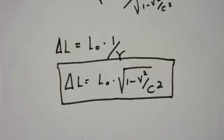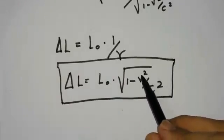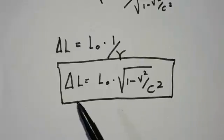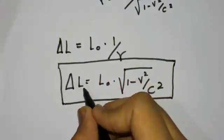So when the velocity becomes equal to the speed of light, v squared becomes c squared, c squared over c squared is 1, 1 minus 1 is 0. So change in length equals to absolutely 0.